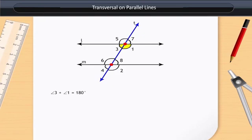That is, these angles make a linear pair. But angle 1 is equal to angle 6 because they are alternate interior angles.